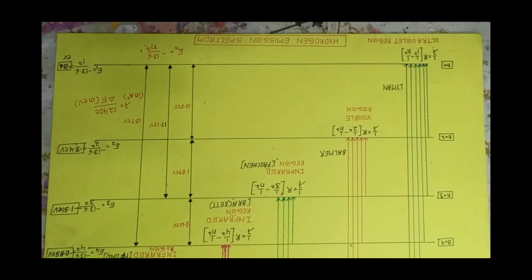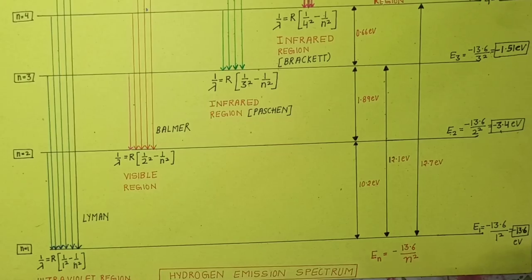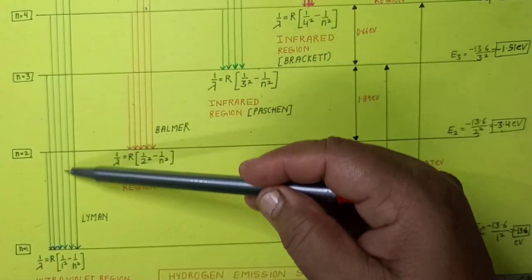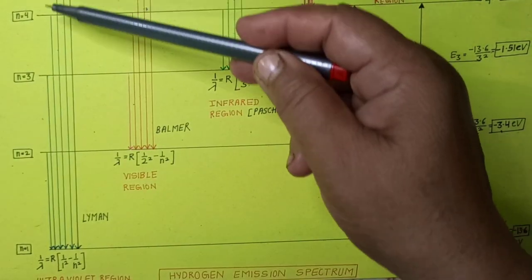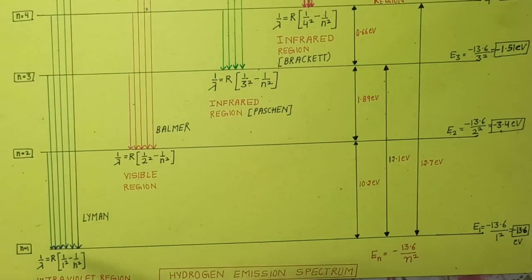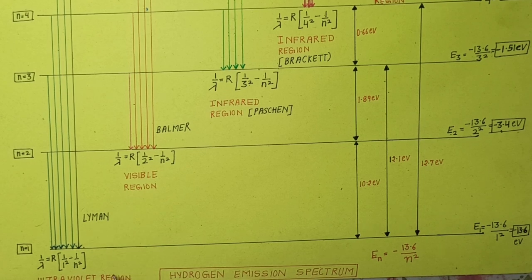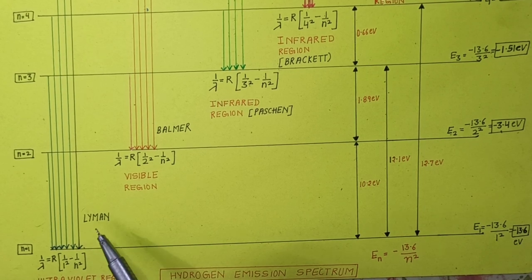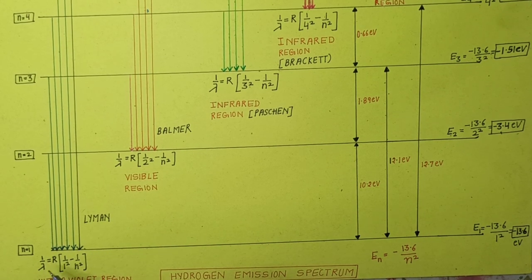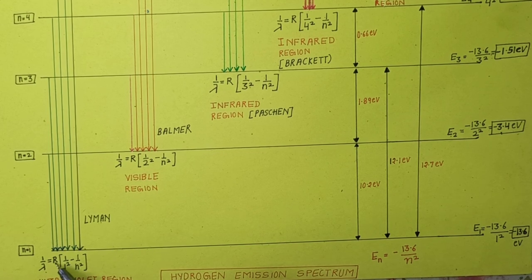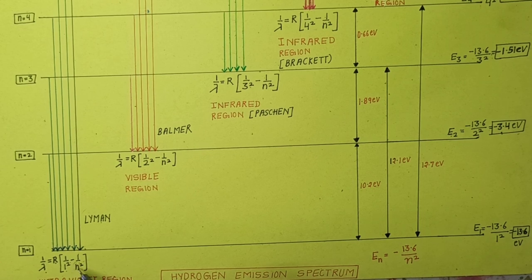Hydrogen emission spectrum: All radiations which are emitted because the electron is transiting from any higher level to n equal to 1 level are lying in the Lyman series, and this series is in the ultraviolet region. The formula to calculate lambda for the Lyman series is: 1 upon lambda equals Rydberg constant times (1 upon 1 square minus 1 upon n square), where n is any higher state.